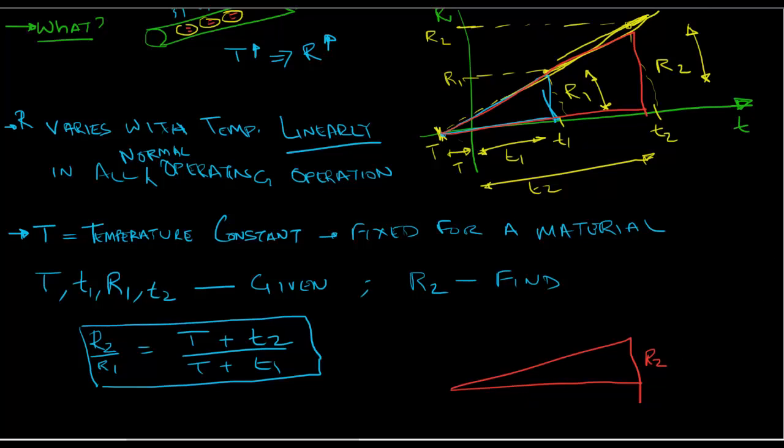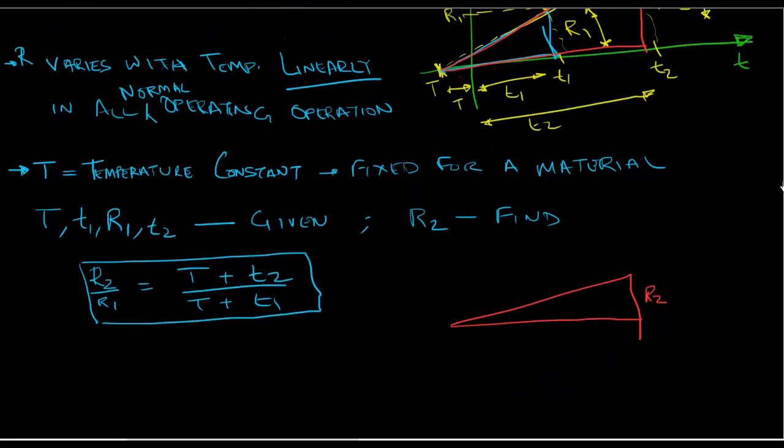This whole distance here is T2 plus T. So let me mark that as well. So this is T plus T2. Let me come here and mark the smaller triangle as well. So you have the smaller triangle here. Where this is R1 and this is T plus T1.